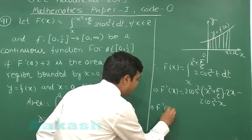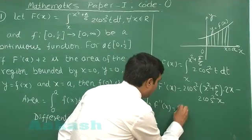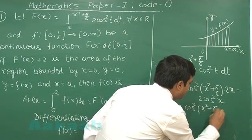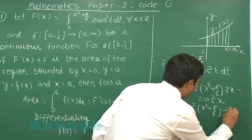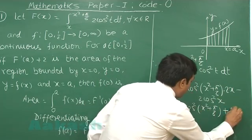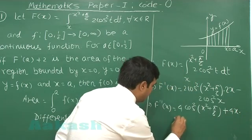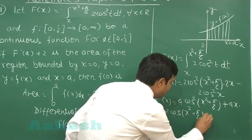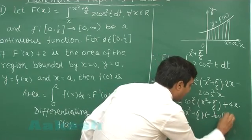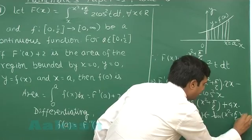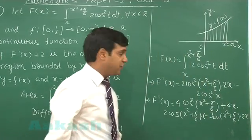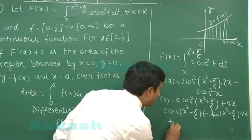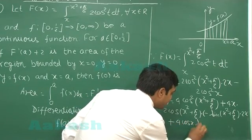Differentiating it again, we get second derivative of capital F as 4 cos squared (x squared + pi/6) times 4x multiplied with 2 cos (x squared + pi/6) times minus sin (x squared + pi/6) times 2x. Applying continuous chain rule, then differentiate this term 2 cos squared x. This gives me minus minus will become plus 4 cos x sin x.